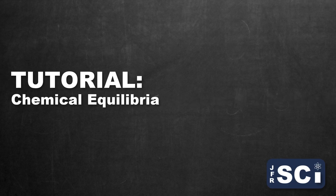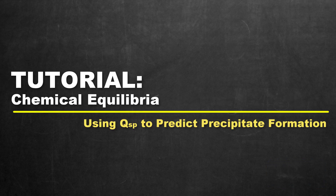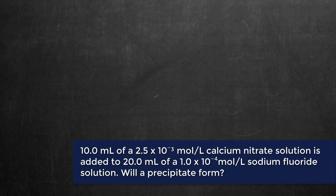Welcome to this tutorial on establishing whether or not a precipitate is going to form by analyzing both the QSP and the KSP of that potential precipitate. Let's get started by going right into the problem. We have a solution of calcium nitrate being added to a solution of sodium fluoride, with concentrations and volumes for both, and we're trying to establish whether or not a precipitate is going to form.